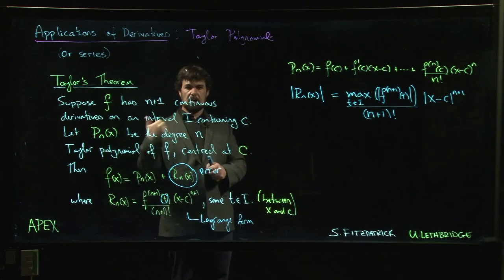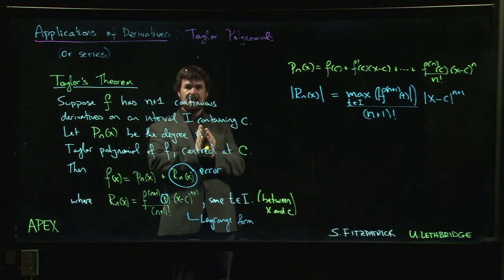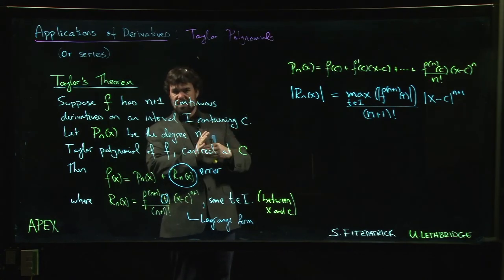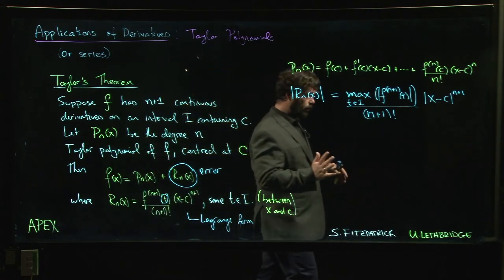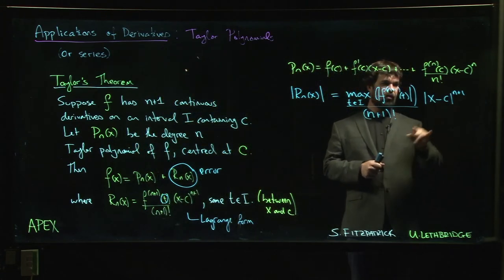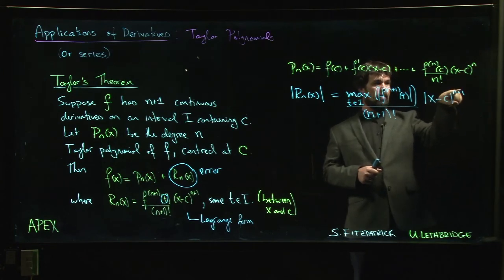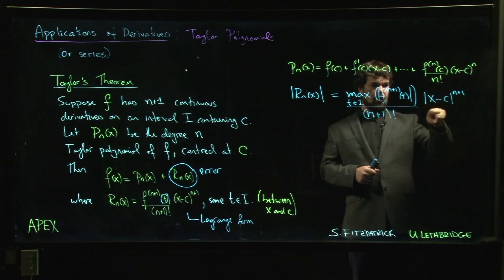That's why we saw with the natural logarithm, as long as we do the Taylor polynomial centered at one and between 0 and 2, we did okay. But once we went past 2, once that difference is bigger than 1, we had a really bad estimate, it wasn't good anymore. As soon as this difference is bigger than 1, it's going to start growing with n.